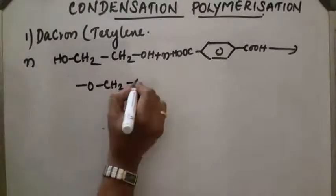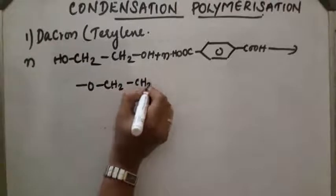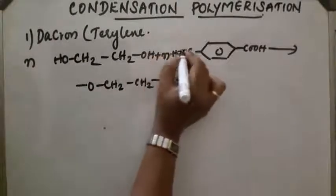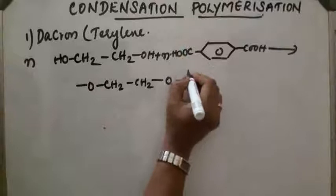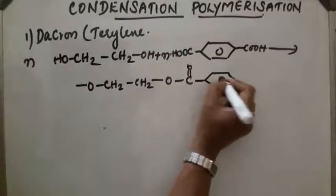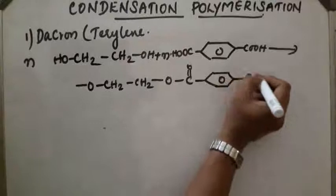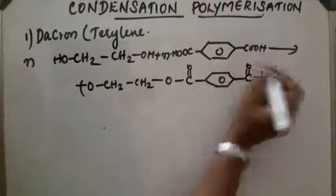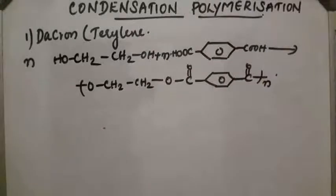One hydrogen atom is removed, CO, and a water molecule is removed. C double bond O polymerizes N times and forms Dacron or Terylene.